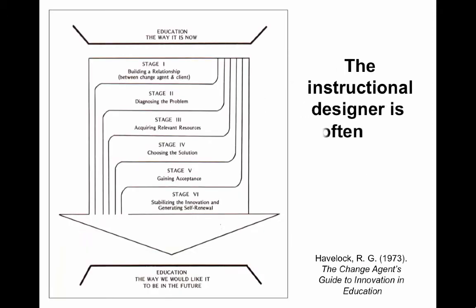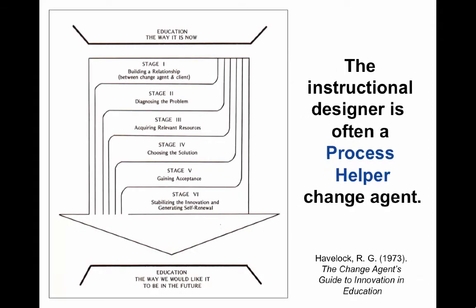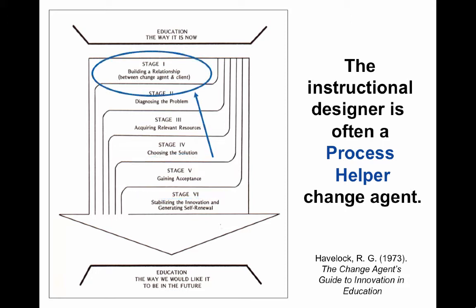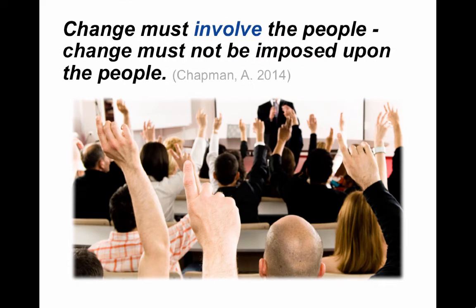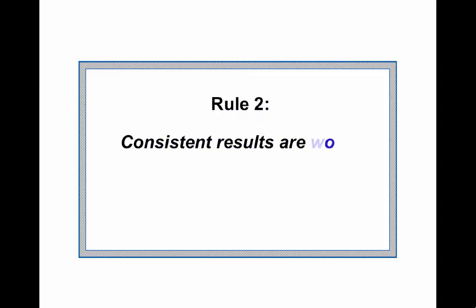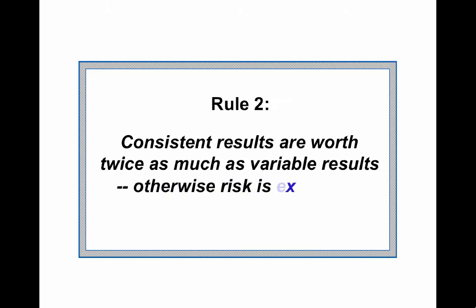The instructional designer is often a process helper change agent, and it's our job to make sure that acceptance is gained when we innovate. That means we have to start at the top with stage one in building a relationship. Effective change occurs when all stakeholders are involved. Change must involve people, and change must not be imposed upon the people. Rule 2: consistent results are worth twice as much as variable results. Otherwise, risk is expensive.